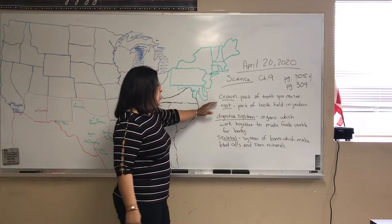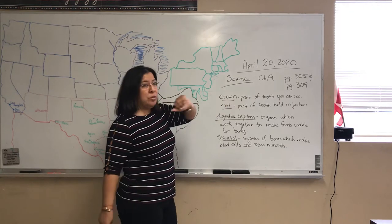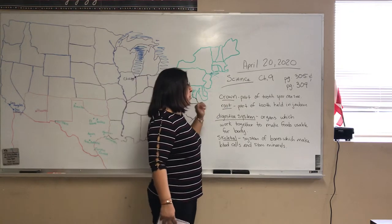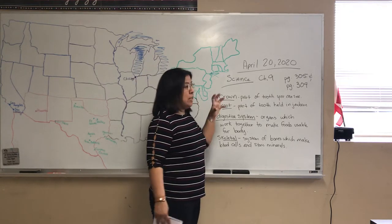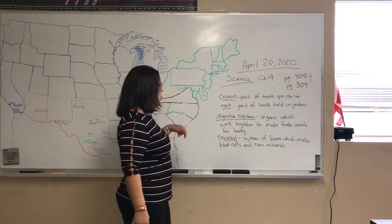The first word is crown — part of the tooth that you can see. The root is part of the tooth that kind of holds the tooth in place in the jawbone.